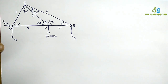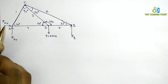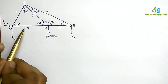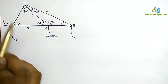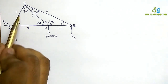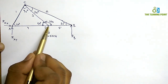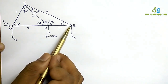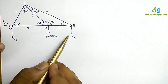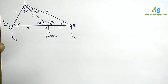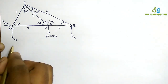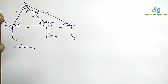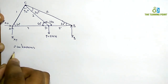The first step is to select which joint to start with. Checking each joint: joint A has 4 unknowns (RAX, RAY, S1, S4), joint C has 3 unknowns, joint D has 3 unknowns, and joint B has 3 unknowns. You should start with a joint having only 2 unknowns. If no such joint exists, choose one with 3 unknowns where an external load allows you to find at least one axial force.